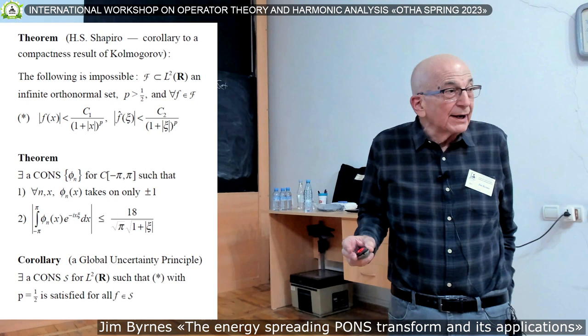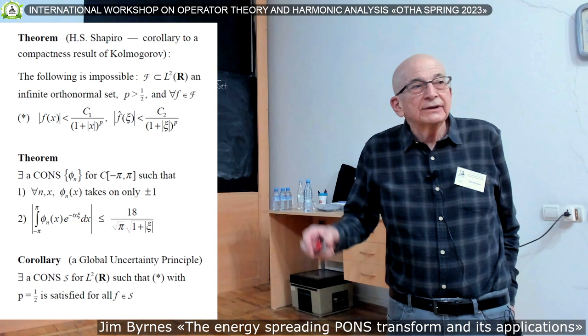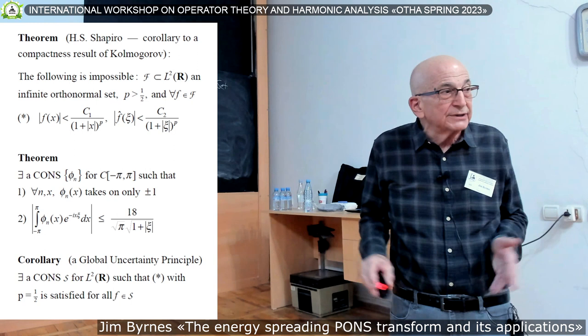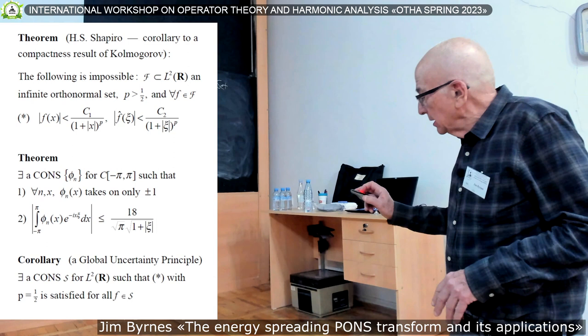The basic standard uncertainty principle in mathematics talks about an individual function and says that both it and its Fourier transform can't go to zero too quickly at infinity. The classic example at the boundary is the Gaussian function, essentially e to the minus x squared.